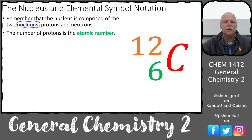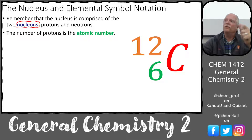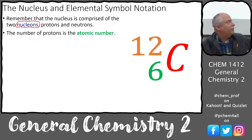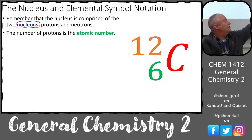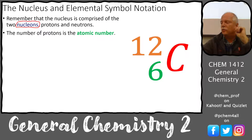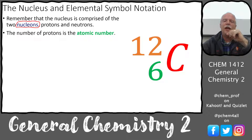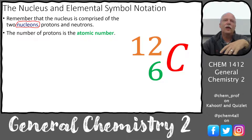The number of protons is called the atomic number. This vocabulary is really important. When I talk about atomic number, that's the number of protons — the numbers at the top of the squares on your periodic tables. The periodic table is organized from low to high number of protons.